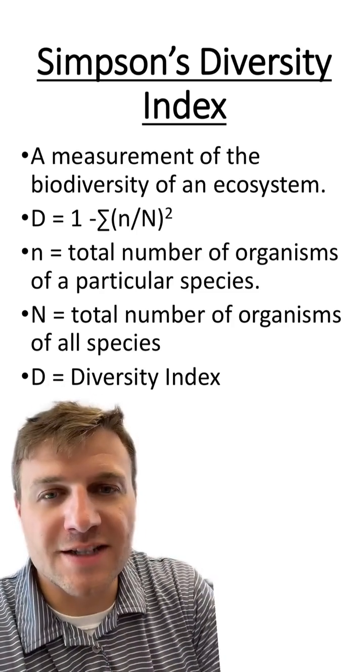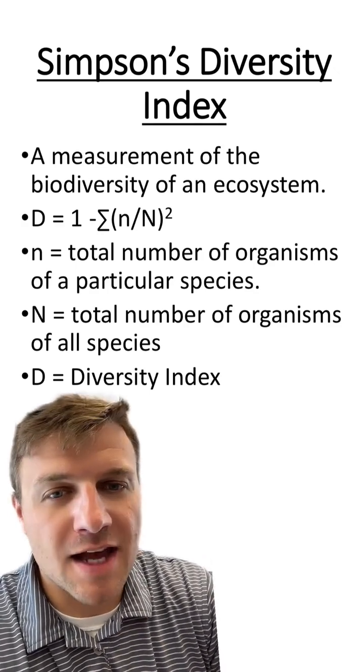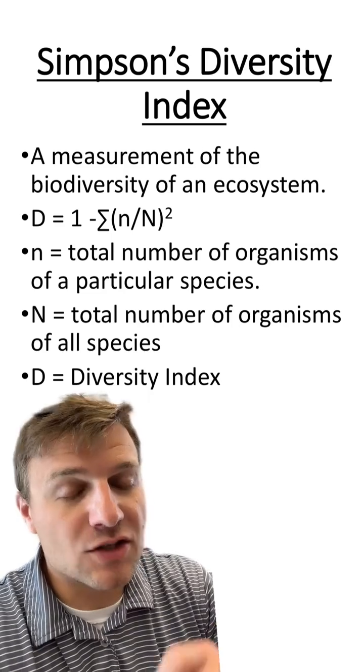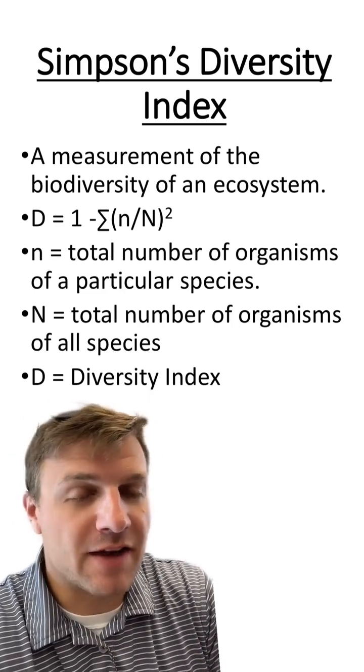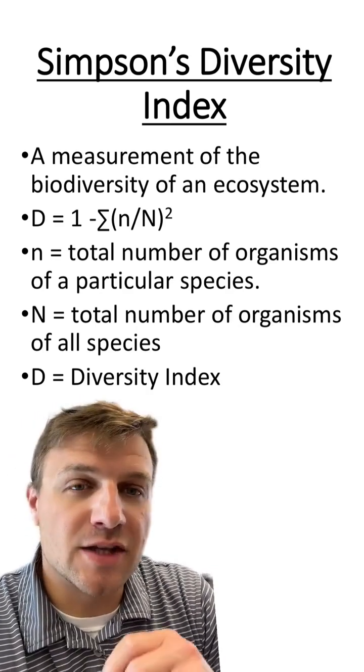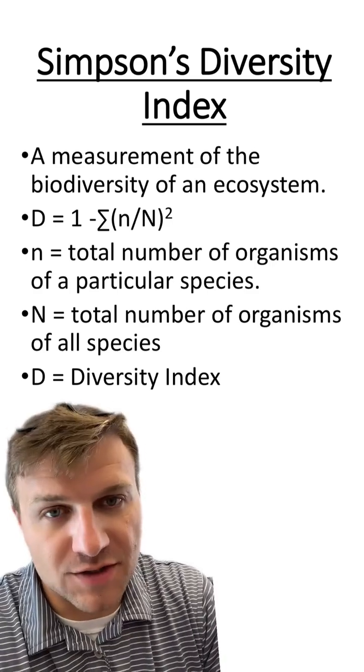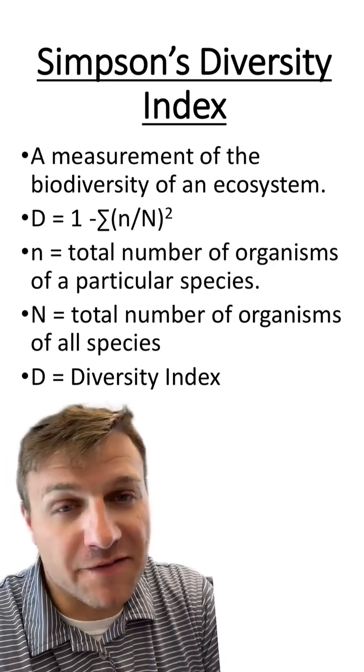You can see our equation is going to be D equals 1 minus the sum of n divided by N squared, where the lowercase n is going to be the total number of organisms of a particular species, while the uppercase N is going to be the total number of organisms of all species. D is going to represent our diversity index.